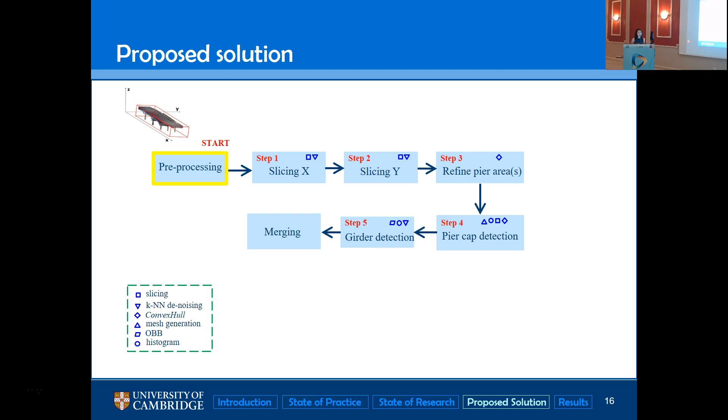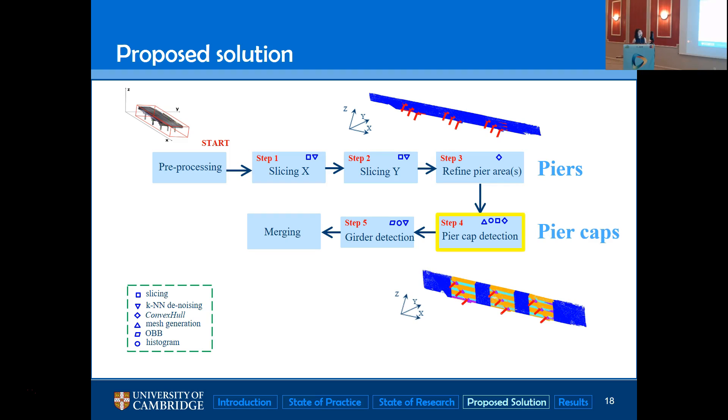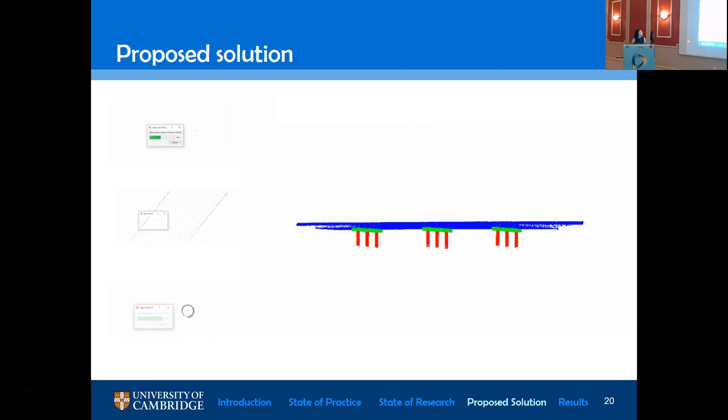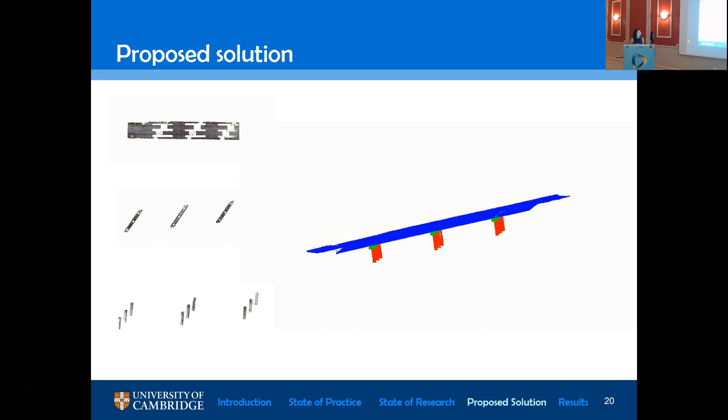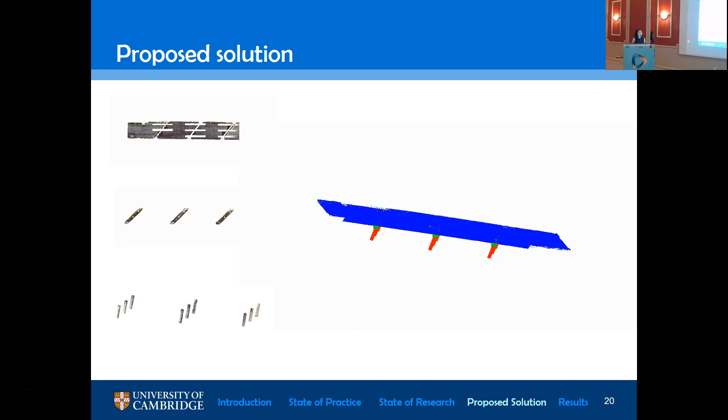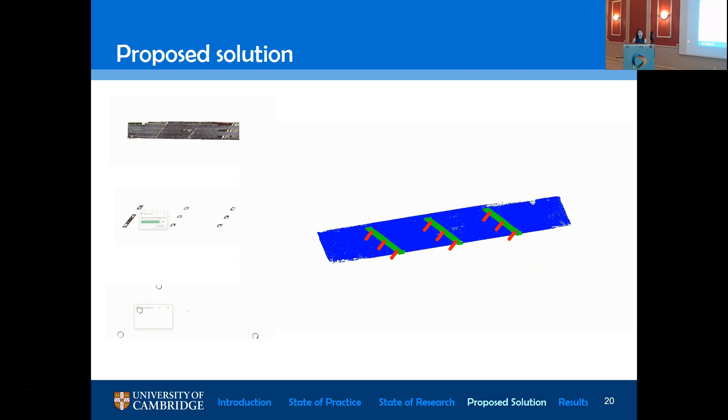Our proposed solution consists of preprocessing step and five major detection steps. The preprocessing step aims to align the bridge and clean up the raw data. From step one to step three, we aim to detect the piers. And step four, we aim to detect the pier caps. And finally, step five, we aim to detect the girders. I'm not going to detail. I'd like to invite you to wait for our upcoming journal. When the detection procedure terminates, all the point segments are going to be merged into one piece according to their class label.